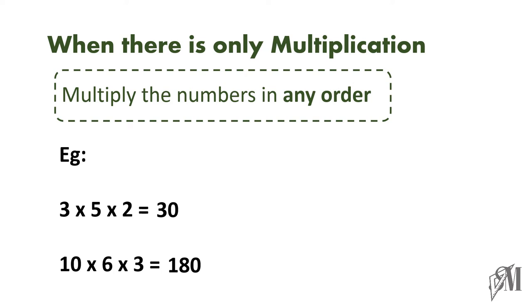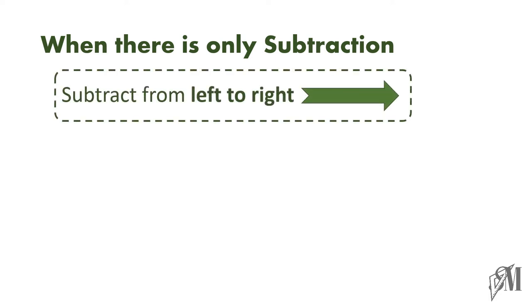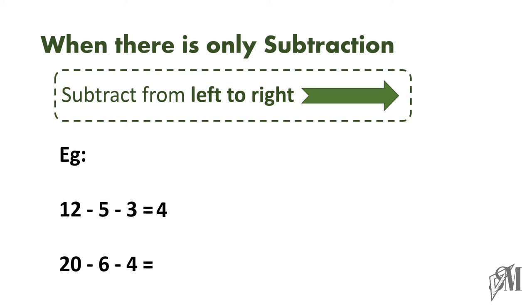Now we are going to move into another part — how to perform a mathematical operation when there is only subtraction. This is different from the previous two cases. Here we have to subtract from left to right. That is, 12 minus 5 is 7, 7 minus 3 is 4. You don't get a proper answer when you go in reverse — 3 minus 5 or 5 minus 12 will give you a different answer which is incorrect. So always when there is only subtraction, you have to start from left and come towards right. For example, 20 minus 6 is 14, 14 minus 4 is 10. Remember, if there is only subtraction to perform, we have to start from left and go in the direction of right.